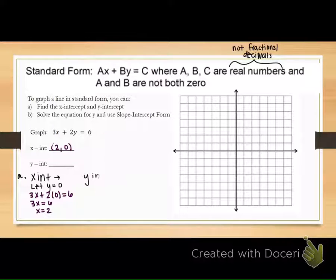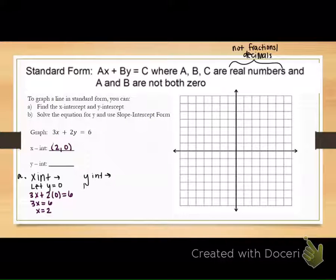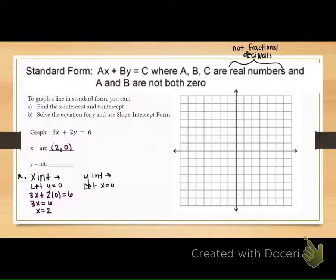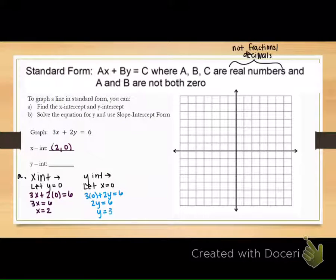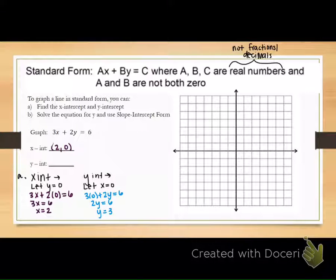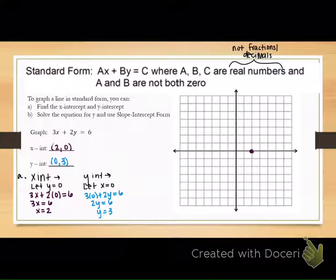So what do we do to find the y-intercept? We plug in 0 for x. When we're on the y-axis, we haven't moved left or right, so x is 0. So we do 3 times 0 plus 2y equals 6, so 2y equals 6, so y equals 3. What ordered pair was just created? 0 comma 3. So if you do it that way, you'll plot those two points — (2, 0) and (0, 3) — and connect them with a straight edge.